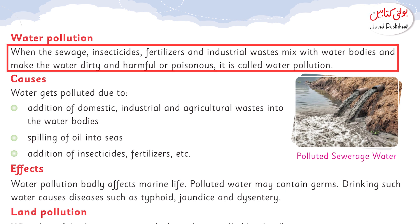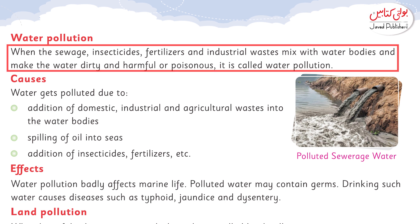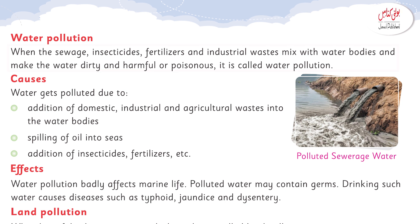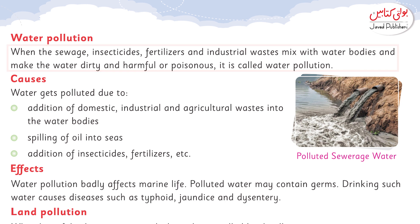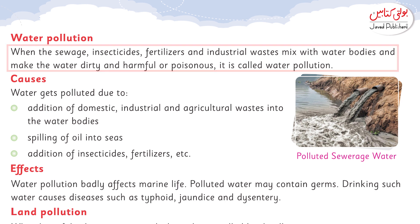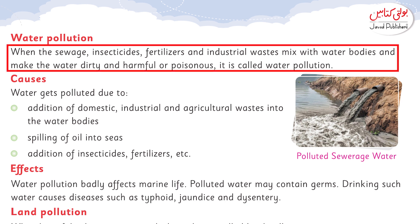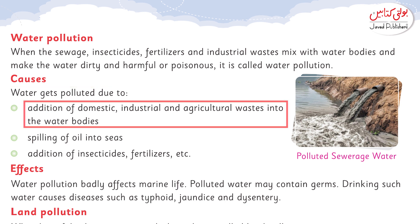When we use insecticides, fertilizers, and industries discharge their waste into the water, it becomes harmful with bad chemicals. These hazardous chemicals cause water pollution. The causes of water pollution include the addition of domestic, industrial, and agricultural waste into water bodies.